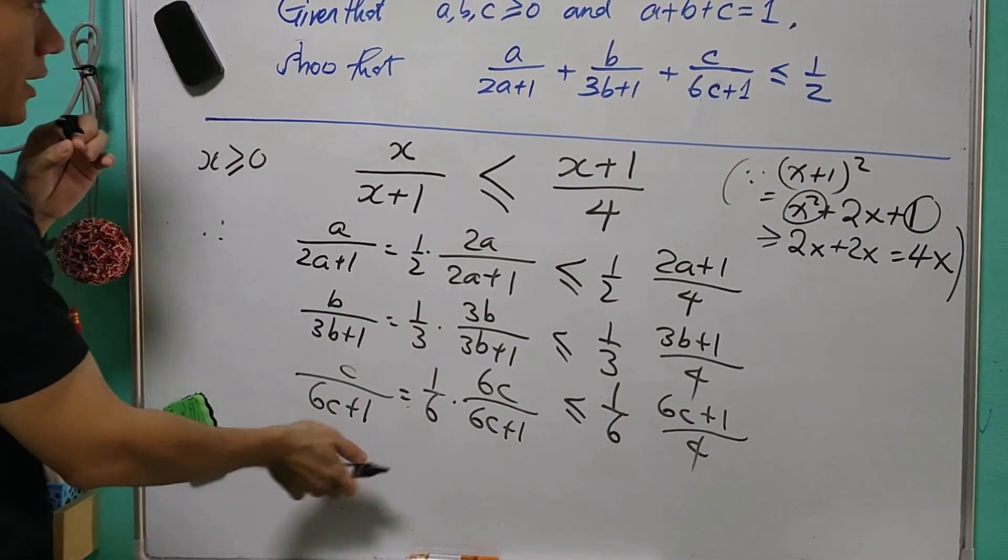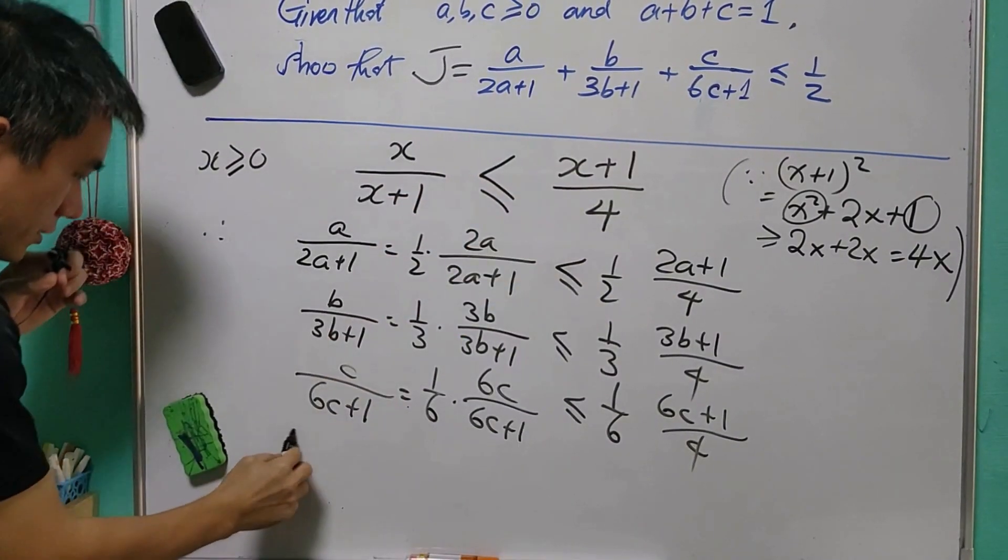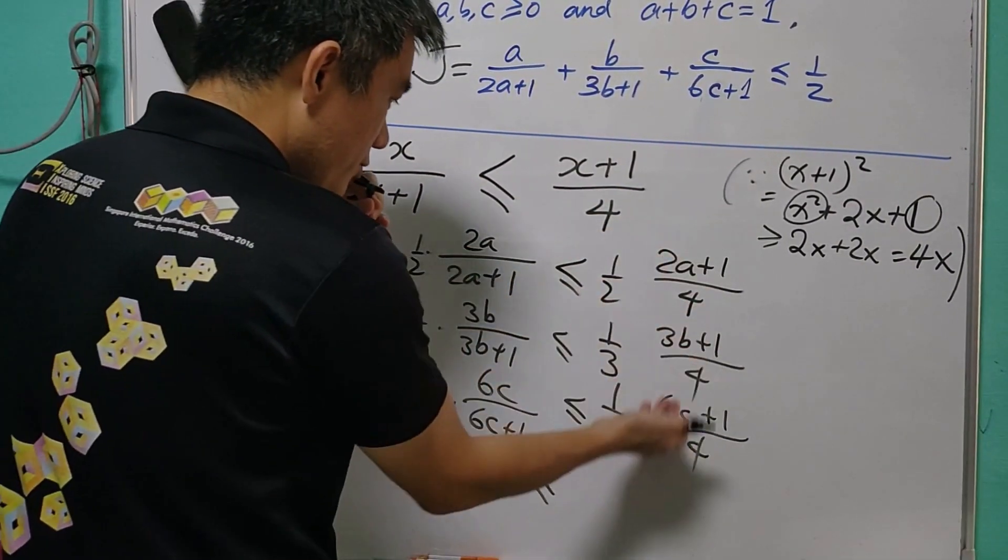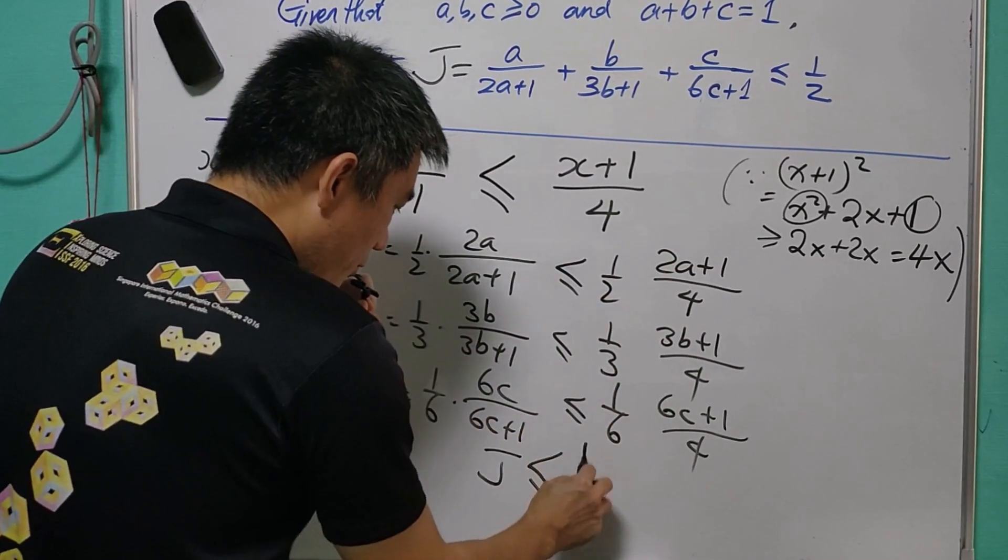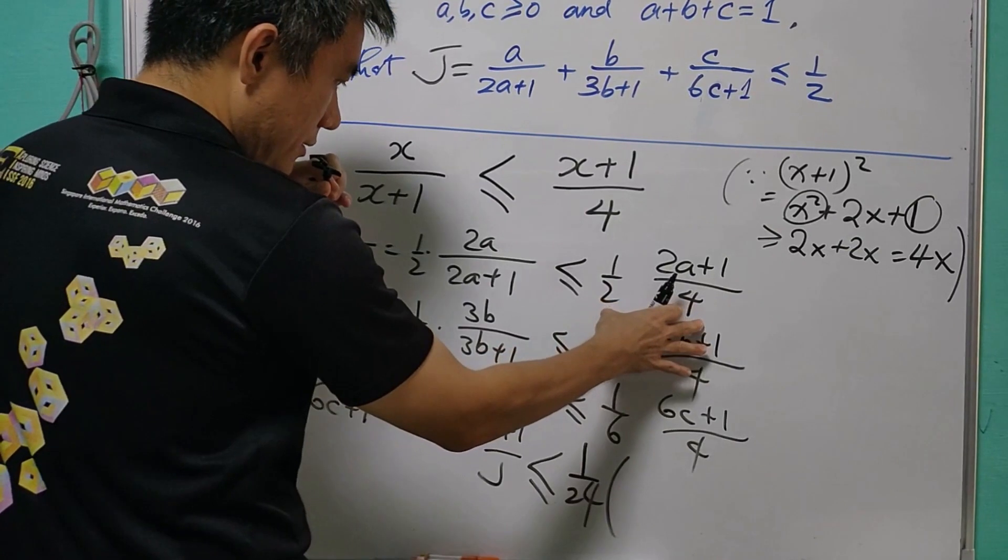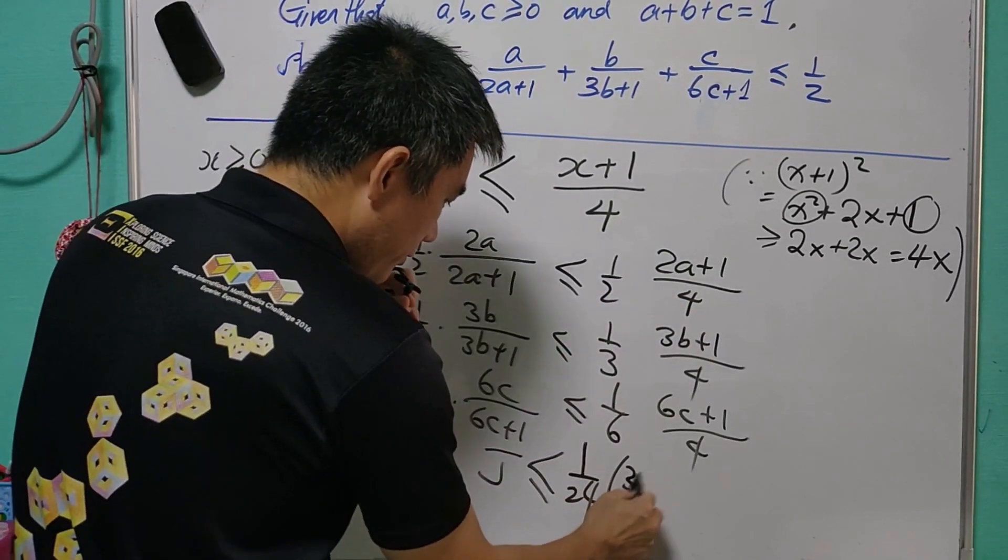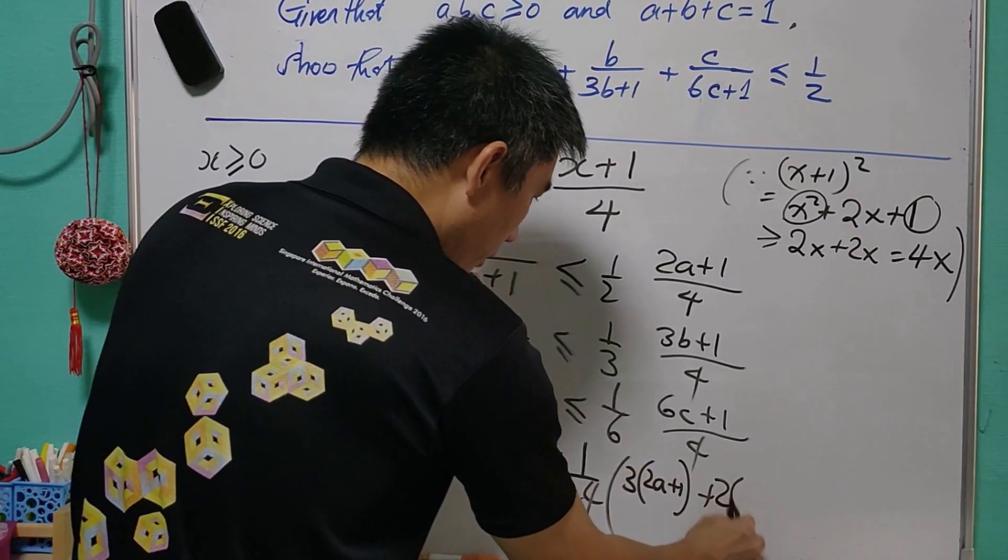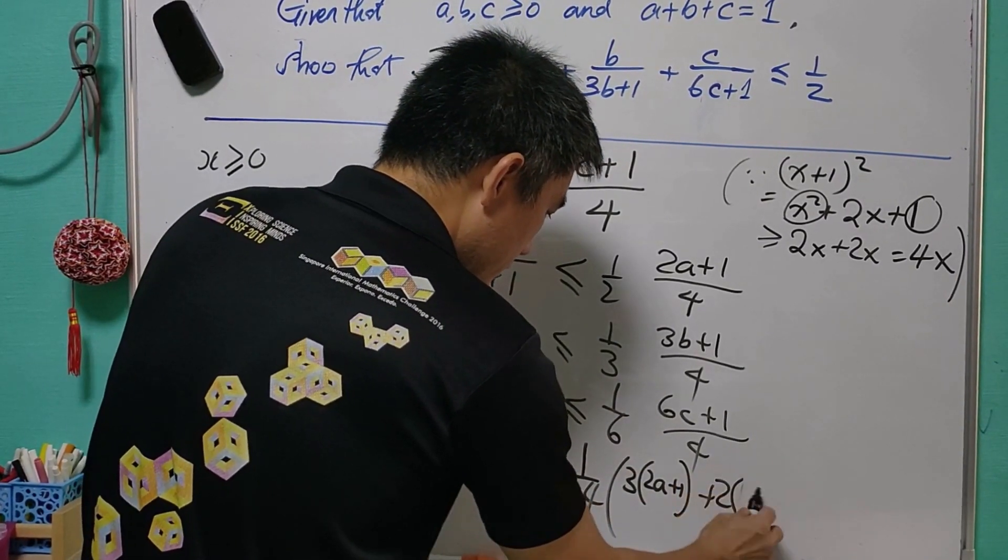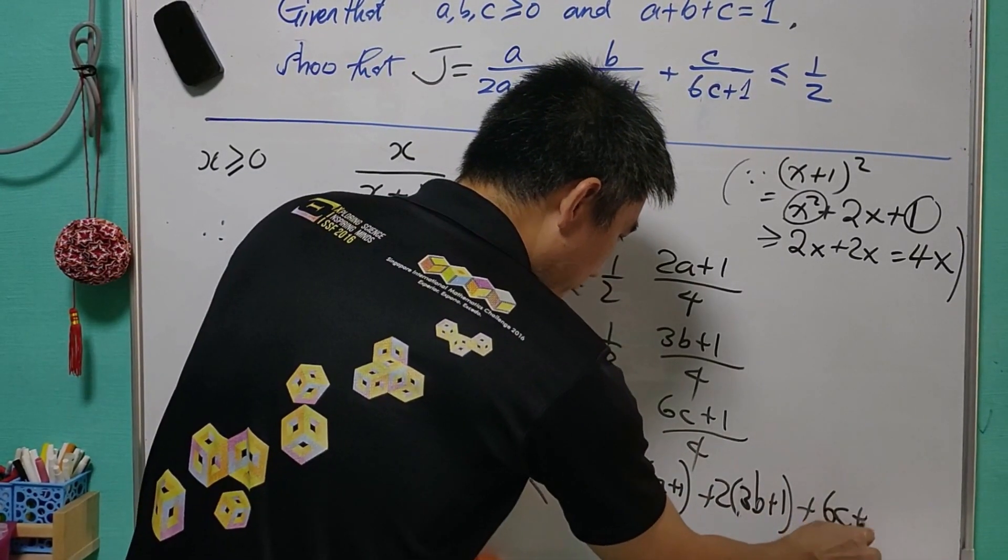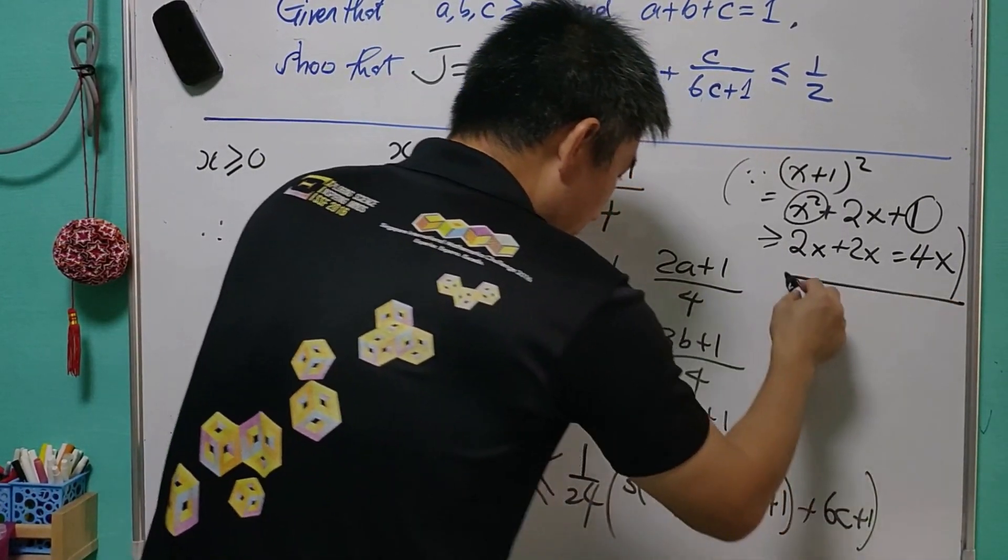Now, when you add up everything and call this as J, then J will be less than or equal to the sum of these three terms. We can have 1 over 24 for each of these, and we will see that this will equal to 3 of 2A plus 1, and this is 2 of 3B plus 1, and this is 1 of 6C plus 1. Let me continue here.